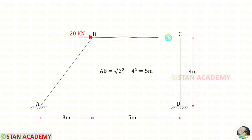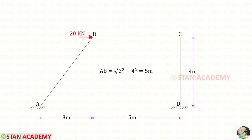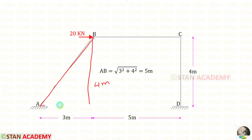The length of the horizontal member is 5 meters. The height of the vertical member is 4 meters. We have to find the inclined length of AB. We can use Pythagoras' theorem. Here we have 4 meters and here we have 3 meters. Taking the root of 3 squared plus 4 squared, we get AB which is 5 meters.